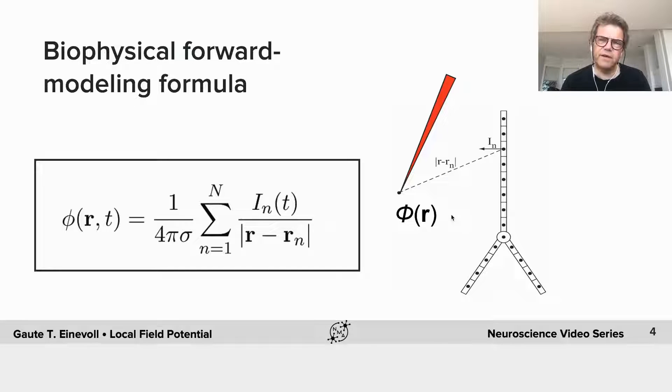So for the simplest case, where there's an infinite homogeneous volume conductor, that's a volume conductor where this extracellular conductivity can be assumed to be the same everywhere and also the same in all directions. And this actually turns out to be a quite good approximation, even inside the cortex.